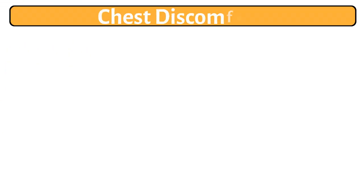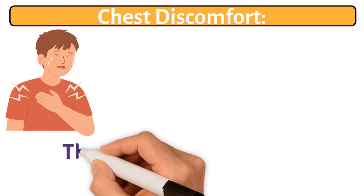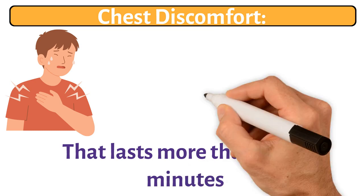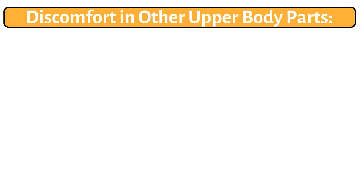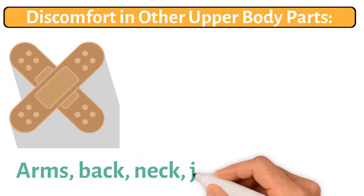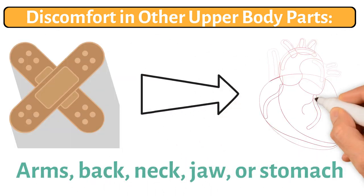9. Chest discomfort. Any discomfort in the chest that lasts more than a few minutes should be taken seriously. 10. Discomfort in other upper body parts. Pain in the arms, back, neck, jaw, or stomach can be heart-related.